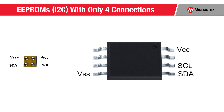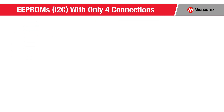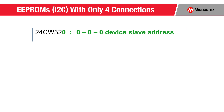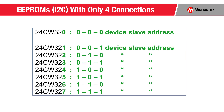These 4-pin products use standard I2C slave coding and control. We sample these parts with device address set at 000, but any device address from 001 to 111 can also be special ordered, allowing up to eight different addressed parts to sit on the same I2C bus for most of our 4-pin densities.